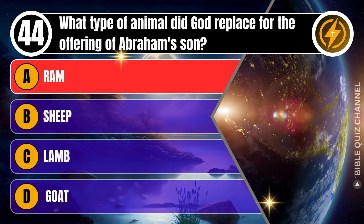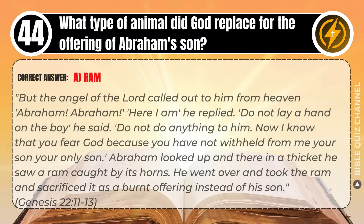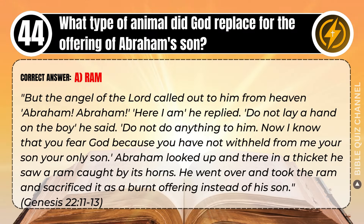Correct answer: A. Ram. Explaining the Bible — The angel of the Lord called out from heaven, 'Abraham, Abraham!' 'Here I am,' he replied. 'Do not lay a hand on the boy. Do not do anything to him. Now I know that you fear God, because you have not withheld from me your son, your only son.' Abraham looked up, and there in a thicket he saw a ram caught by its horns. He went over and took the ram and sacrificed it as a burnt offering instead of his son. Genesis, chapter 22, verse 11 to 13.